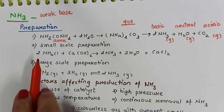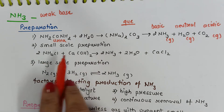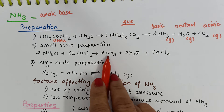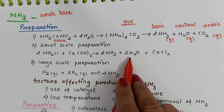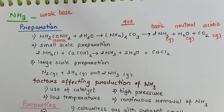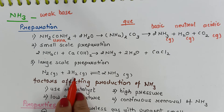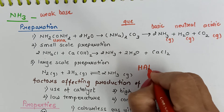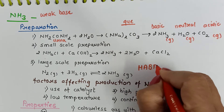On a small scale we can obtain ammonia by treating ammonium chloride with calcium hydroxide, where we get ammonia and water, with calcium chloride as a byproduct. On large scale, ammonia is prepared by treating nitrogen with hydrogen, and that process is known as Haber's process.